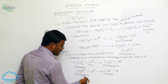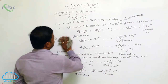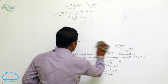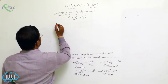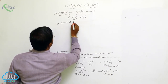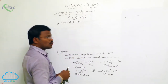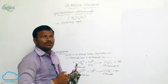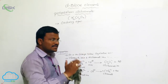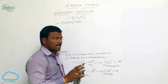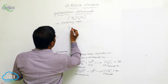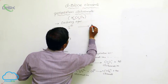Potassium dichromate is a strong oxidizing agent. It is useful to oxidize iodide ions into iodine, sulfide ions into sulfur, Sn²⁺ into Sn⁴⁺, as well as ferrous ions into ferric ions. Let us see how iodide ions are converted into iodine.